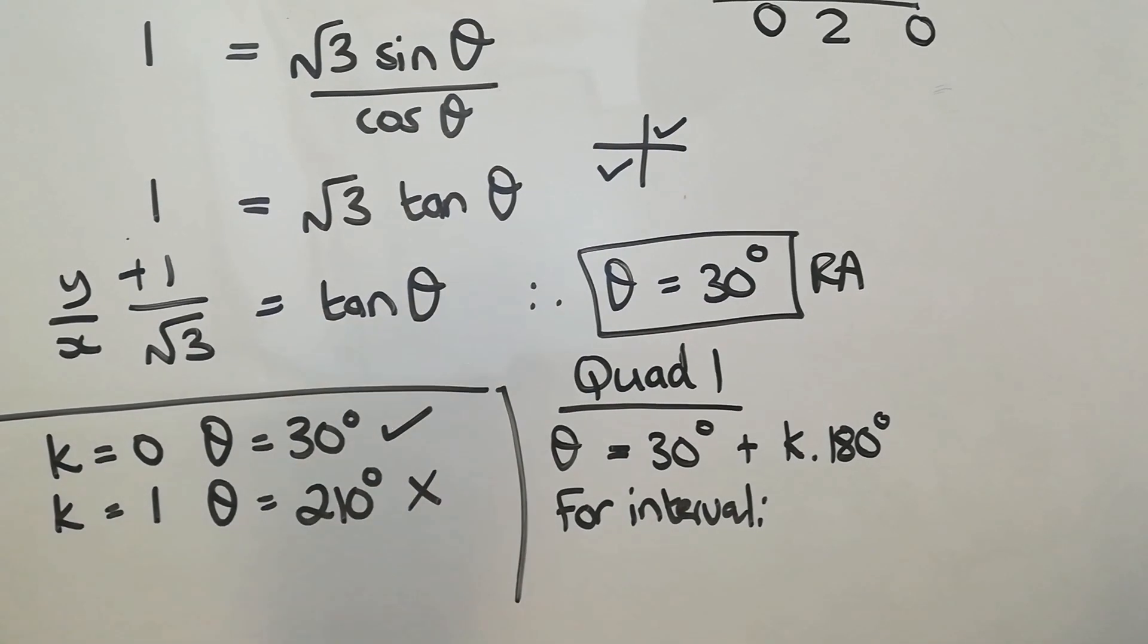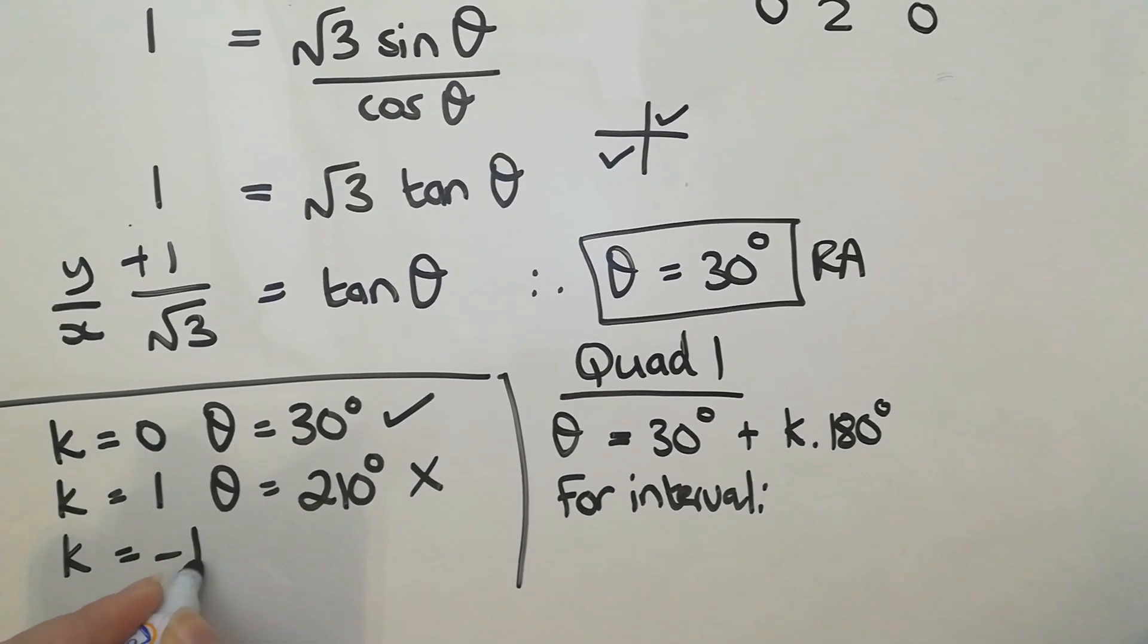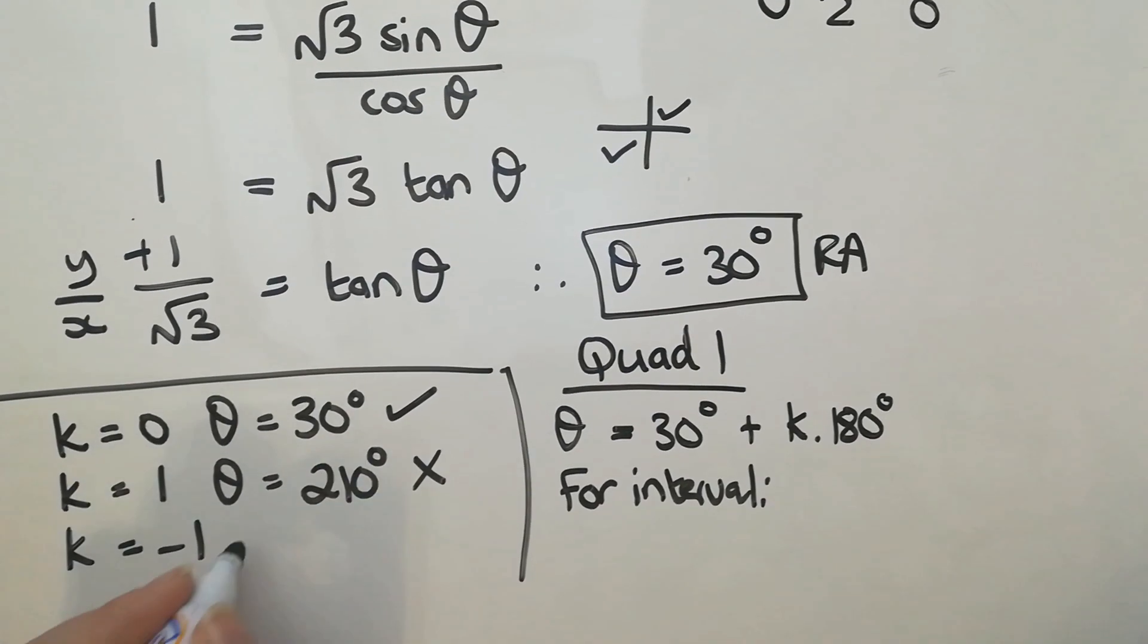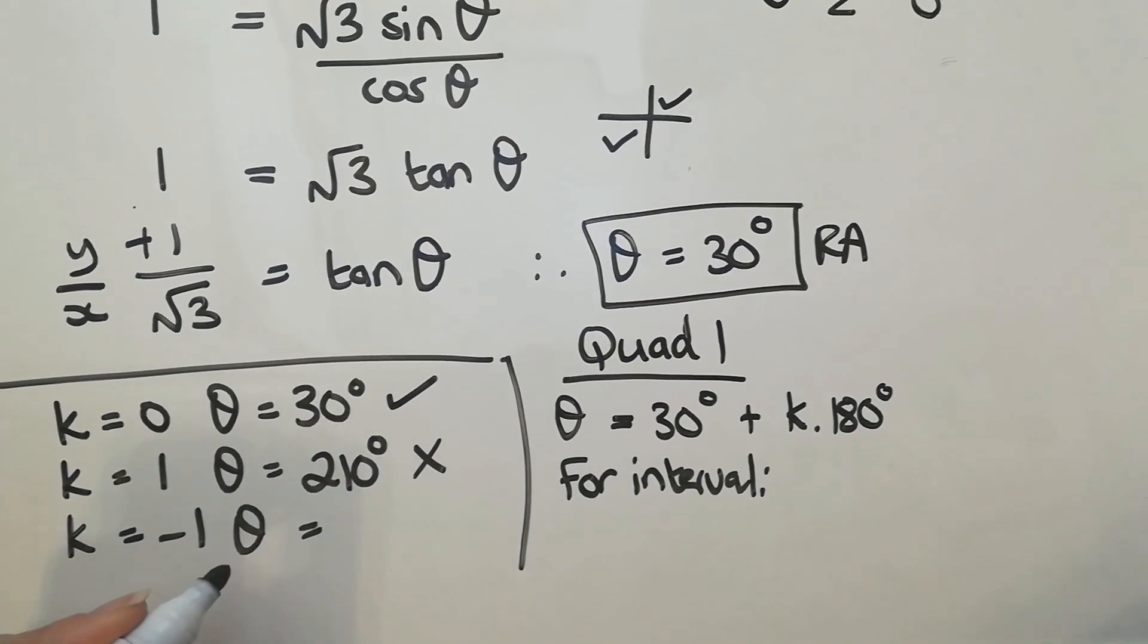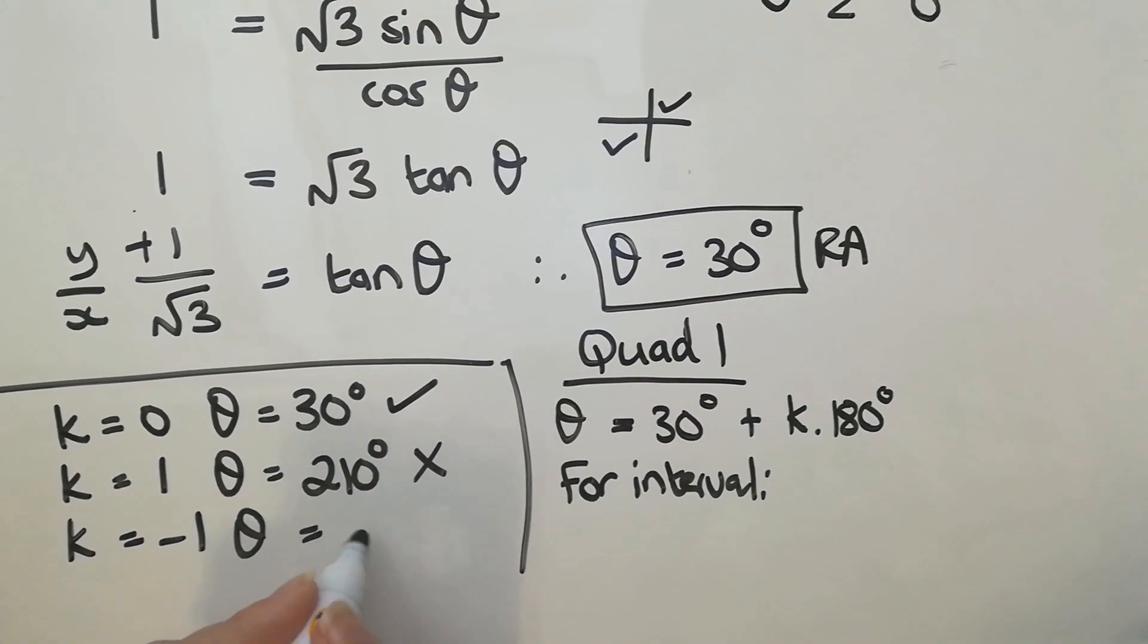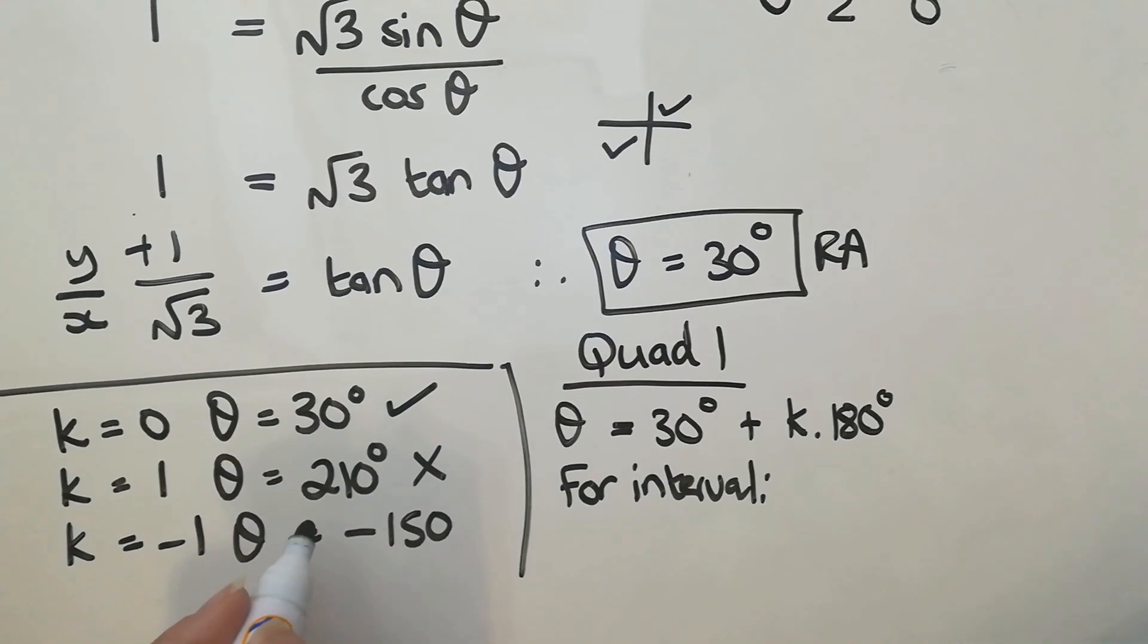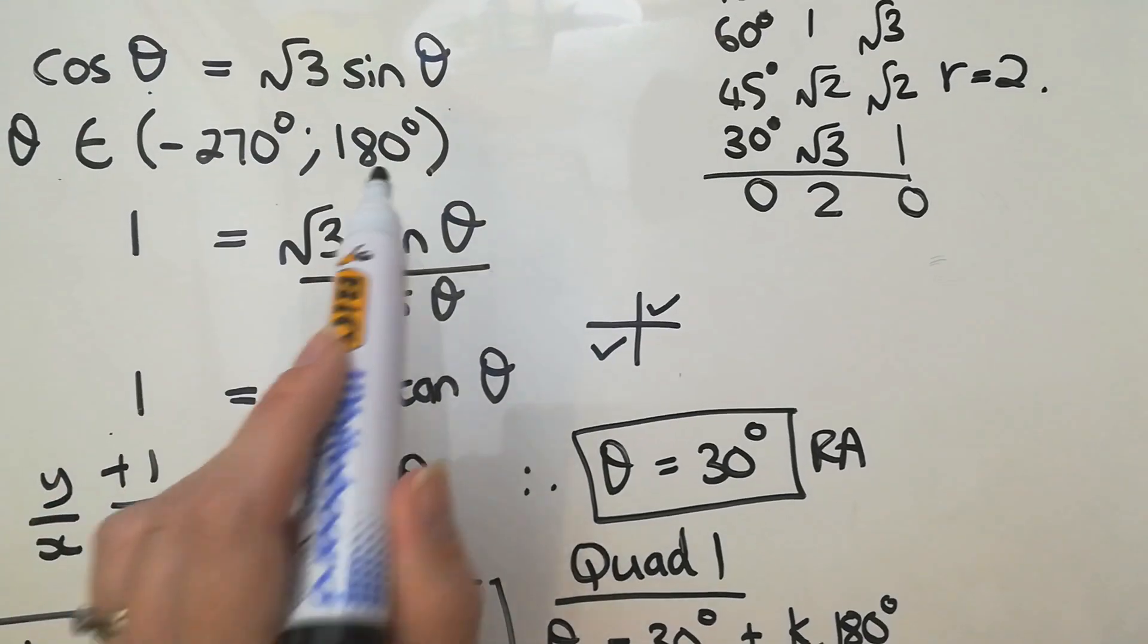Because obviously that's already too big, so k being 2 will be too big. So let's go negative 1. If k is negative 1, then I'm going to have 30 minus 180. So I'm actually going to get negative 150. Does negative 150 fit into that? It does.